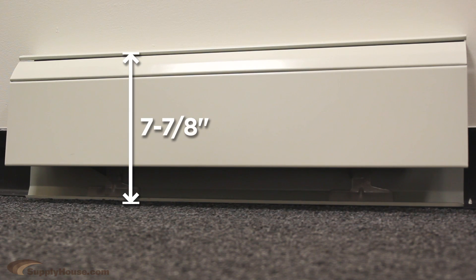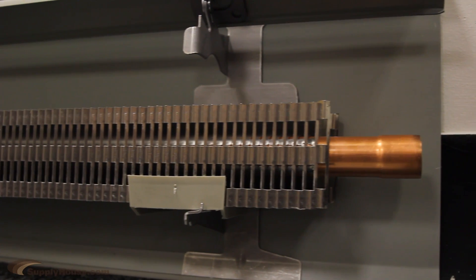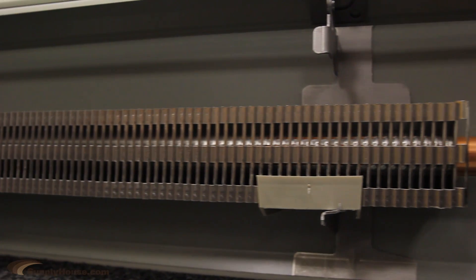The Fineline 30 series has an overall height of 7 and 7/8th inches, and an overall depth of 2 and 11/16th inches, and has a heat output of up to 610 BTUs per foot.